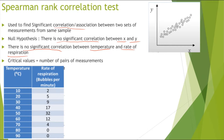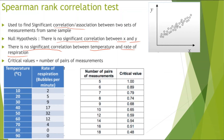Critical value is important when we are looking at if there is any significant correlation. Just remember that critical value for a Spearman rank correlation test can be calculated by counting how many pairs of measurements we have. In this case we have 1, 2, 3, 4, 5, 6, 7, 8, 9. So looking up 9 on the table, my critical value is 0.68. This will become important later on.